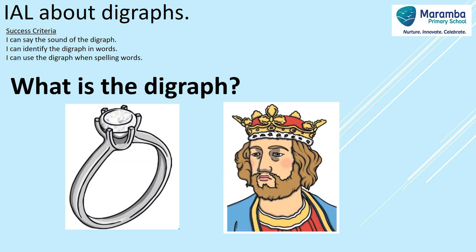What's the digraph for these two pictures? The first picture is a ring, and the second picture is a king. Do you know the digraph? That's right — n, g makes 'ng'.